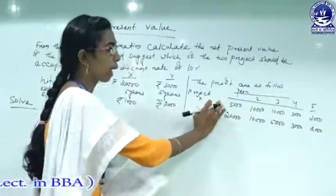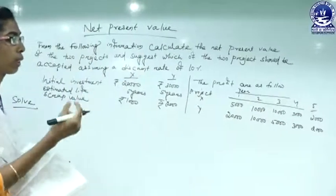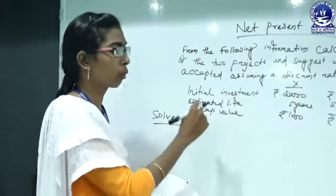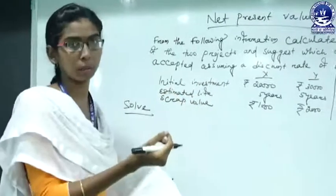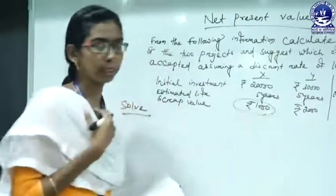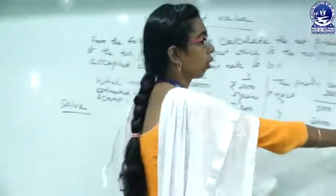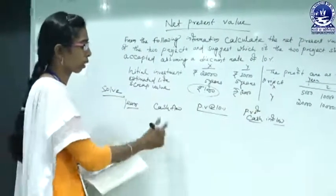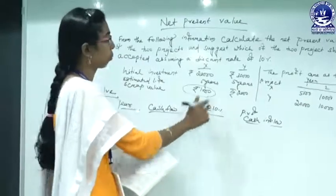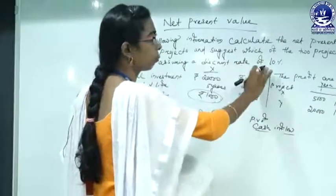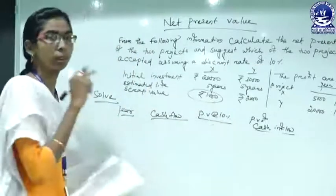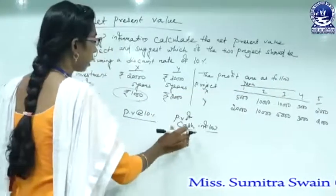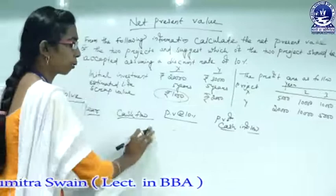We are going to add all inflows considering the time value of money. We must also include the scrap value, as it is a realization value from selling the capital asset — so the ₹1,000 scrap value is included with the cash inflows. The cash flows for all five years are listed, and we apply the present value factor at 10% discount rate (as given in the question), using i = 10% and n = 1 through 5.